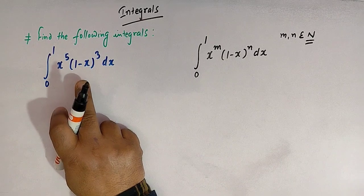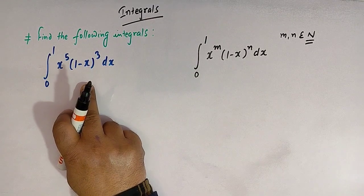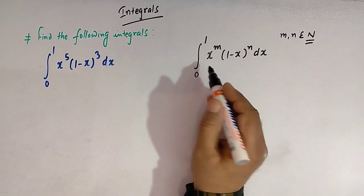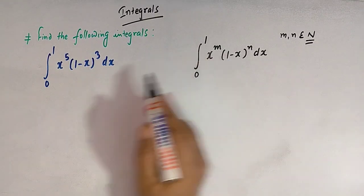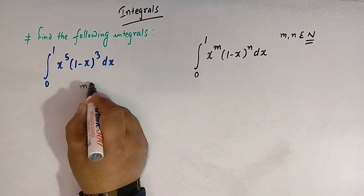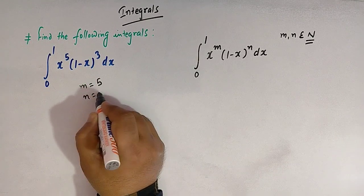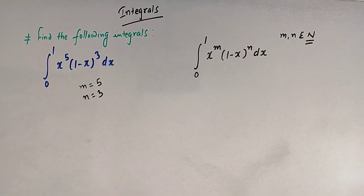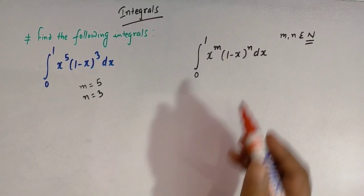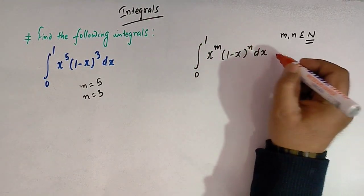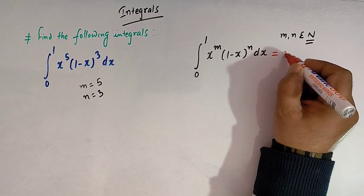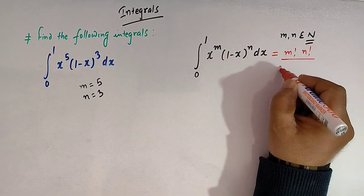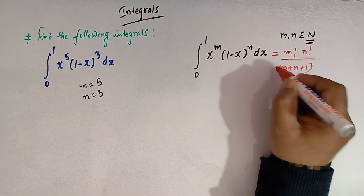When we closely observe these two integrals we can see they are quite similar. Comparing them, the value of m is equal to 5 and the value of n is 3, and both 5 and 3 are natural numbers. The value of this type of integral can be written as m factorial multiplied by n factorial divided by m plus n plus 1 factorial.